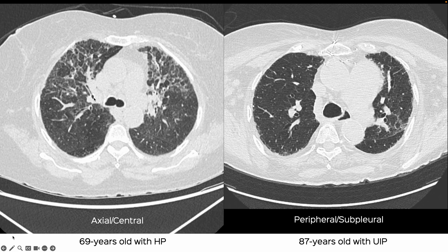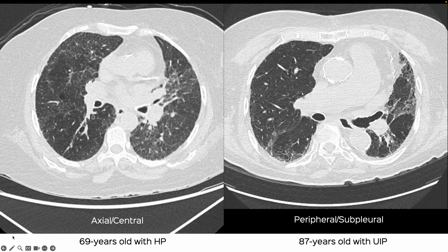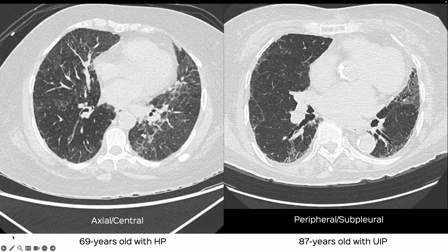If you see the reticular opacities here, they go from the hilum to the periphery — look at it here. Whereas here, these reticular opacities in the upper lobes are peripheral and subpleural. As we go towards the hilum, you can again see the axial distribution, whereas here it's all subpleural and peripheral.